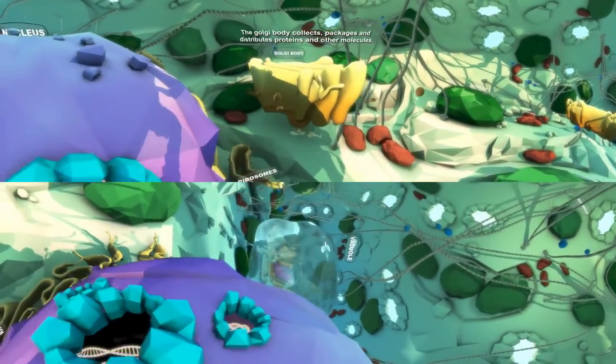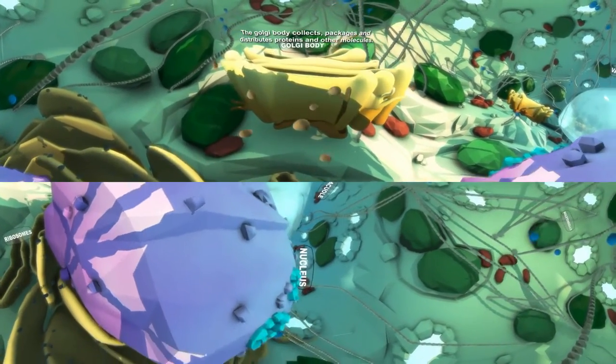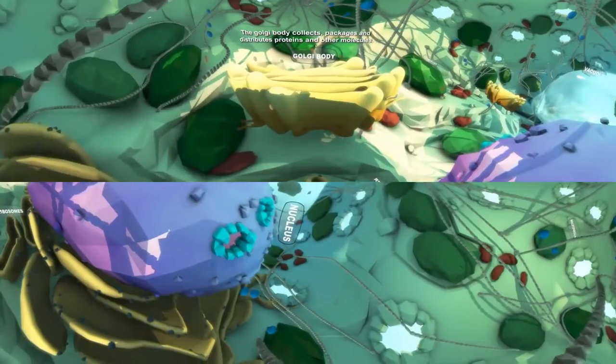The Golgi body, which is made up of many membrane-bound sacs, collects, packages, and distributes proteins and other molecules made in the cell.